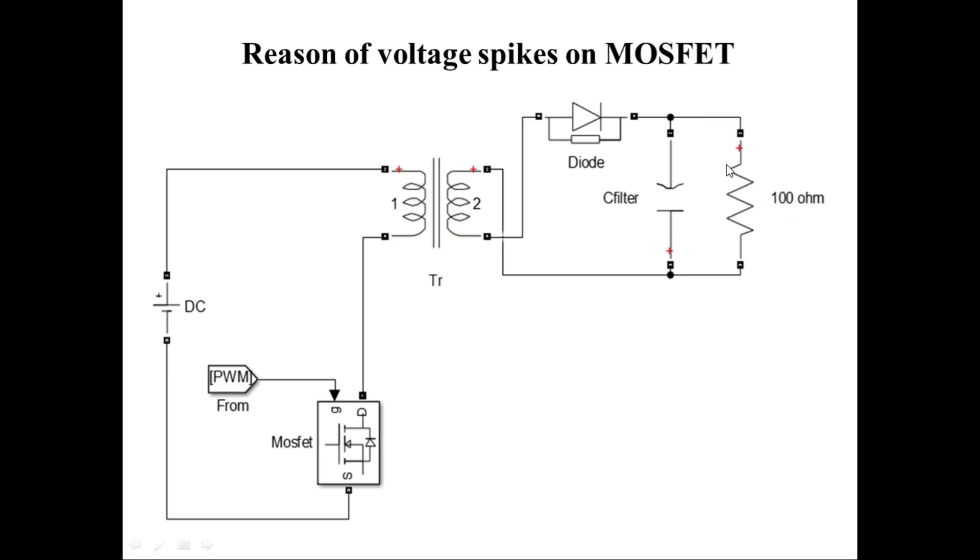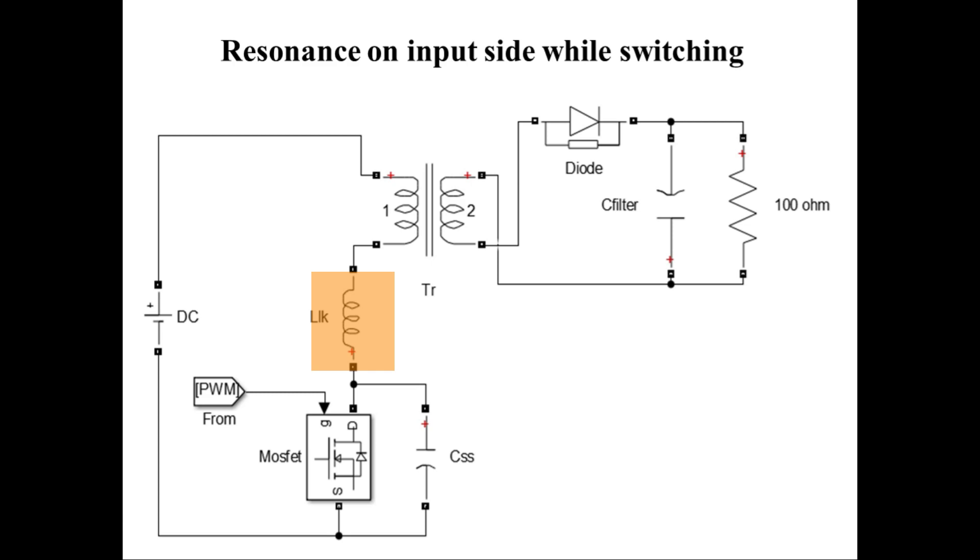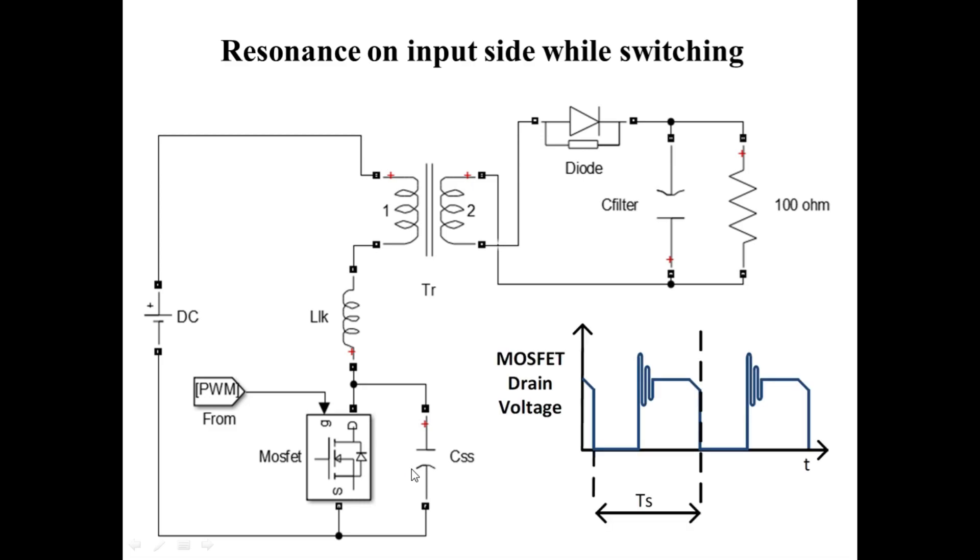Let us visualize this circuit again, but now in the presence of leakage inductance, which is shown in series with the MOSFET for simplicity. The output capacitance of MOSFET is also denoted by CSS. During the turn-on and turn-off instances of the transformer's primary winding, its leakage inductance and the MOSFET's output capacitance form a tank circuit and undergo resonance. This resonance phenomenon induces voltage spikes on the MOSFET.